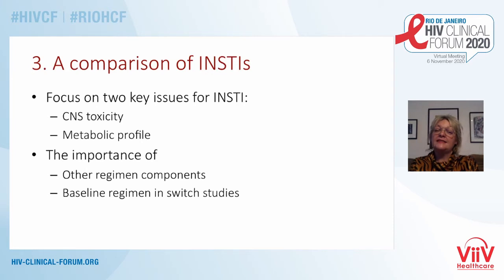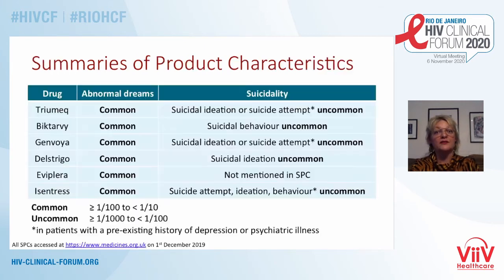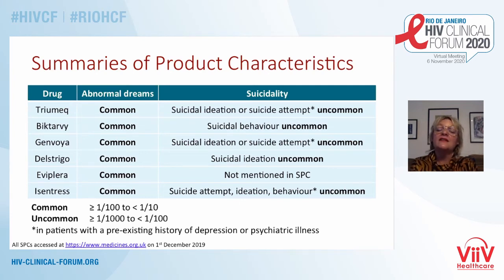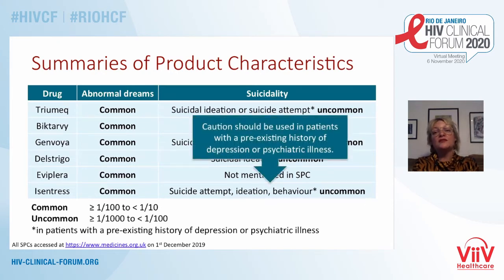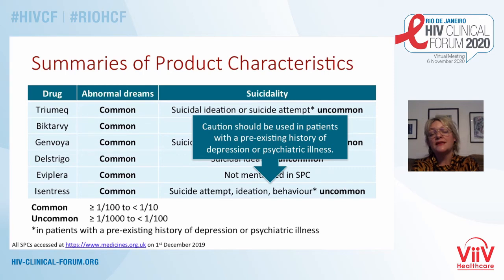Finally, let's think about comparing different INSTIs, focusing on two key issues: CNS toxicity and metabolics. CNS toxicity, in particular mood and suicidality, have been listed as issues for integrases. Looking at the summary of product characteristics for different integrase regimens, suicidal ideation or suicide attempt are uncommon across the board. For raltegravir in particular, caution is advised when using the drug in people with a pre-existing history of depression or psychiatric illness. All of these drugs, where compared against efavirenz, do fare much better, but it is a class toxicity highlighted in the EACS guidelines.